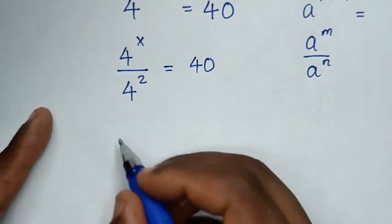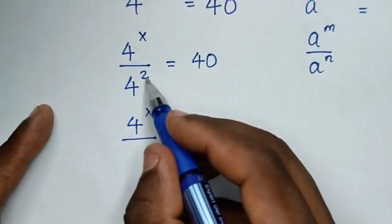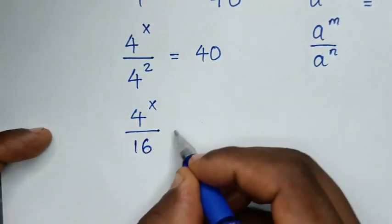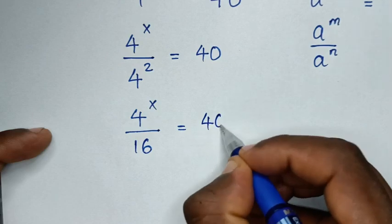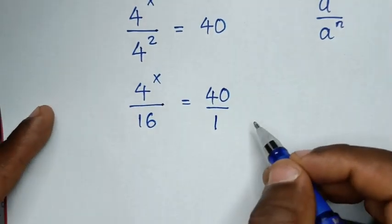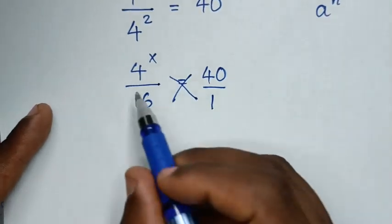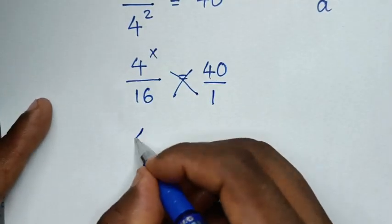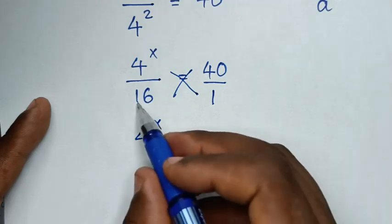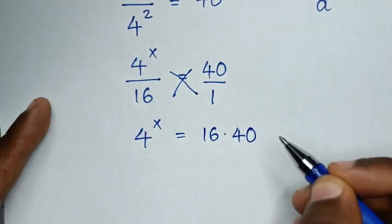Then it will be 4 power of x over 4 power of 2 — which is 4 squared, equal to 16 — is equal to 40, whereas 40 is the same as 40 over 1. Then we cross multiply, so it will be 4 power of x times 1, giving us 4 power of x is equal to 16 times 40.